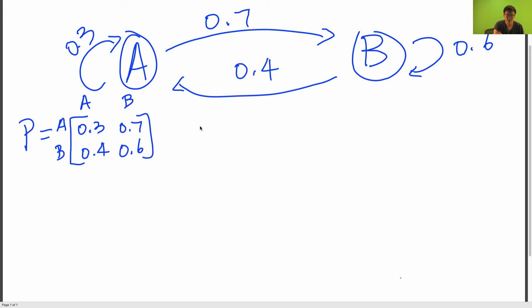And then let's set our pi to be equal to the row vector pi A and pi B. So this is what we're going to solve for. And now let's try to solve the equation pi P is equal to pi.